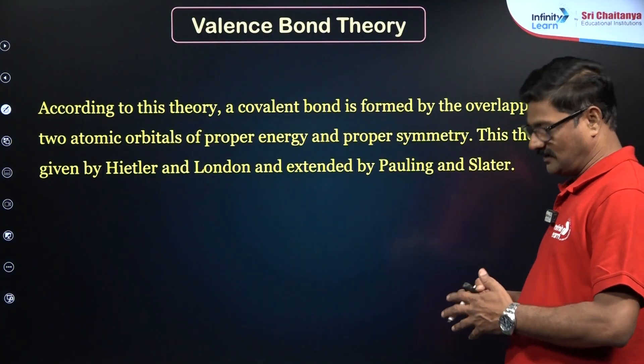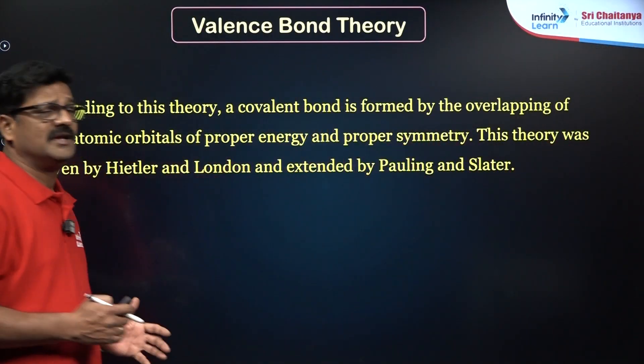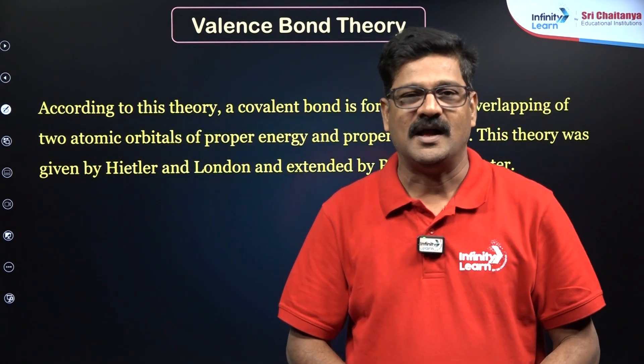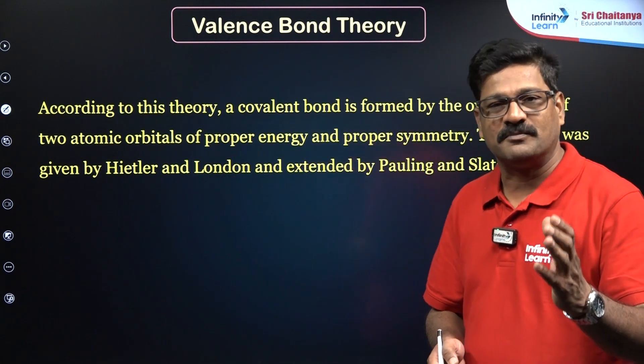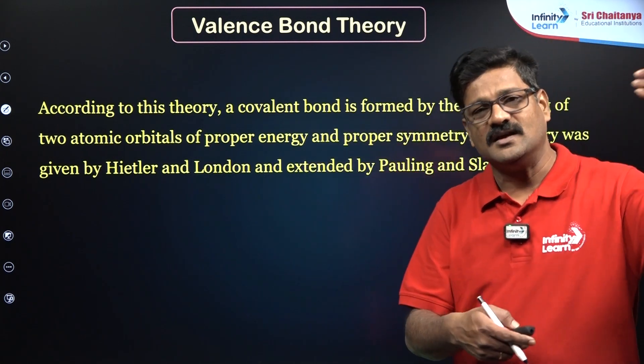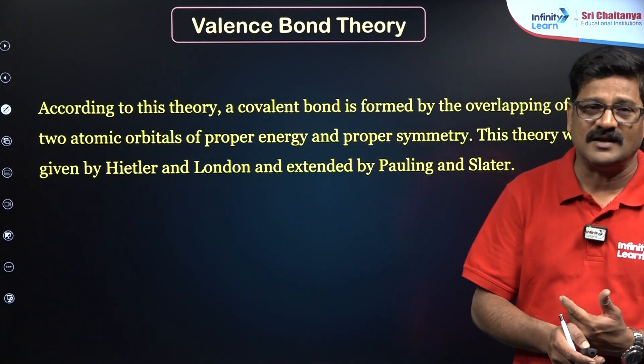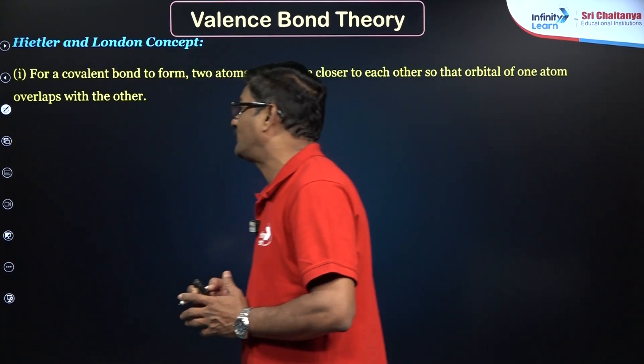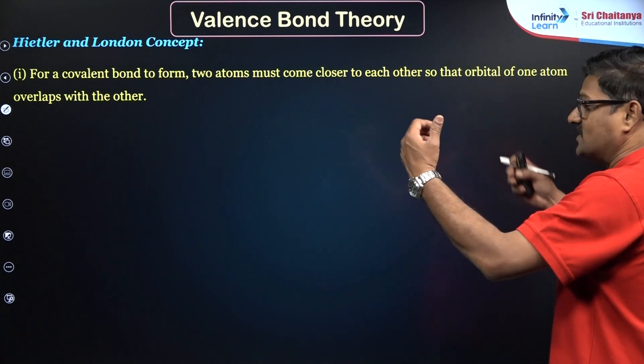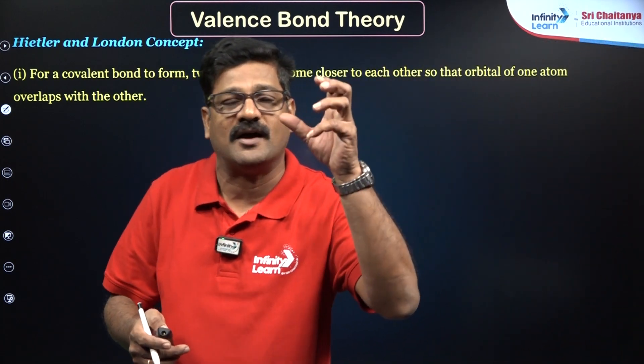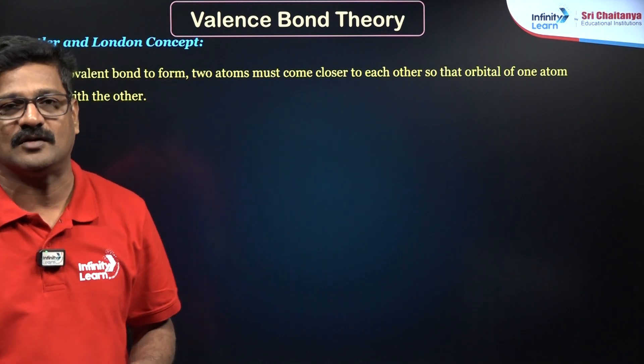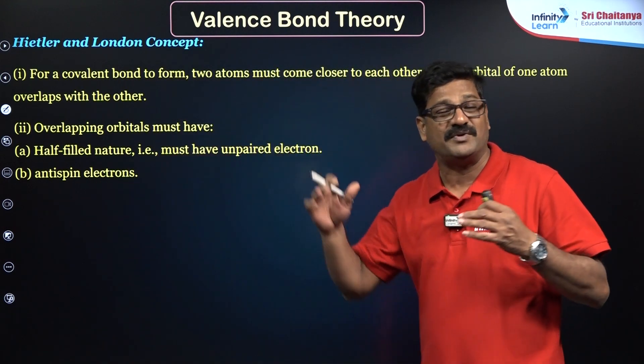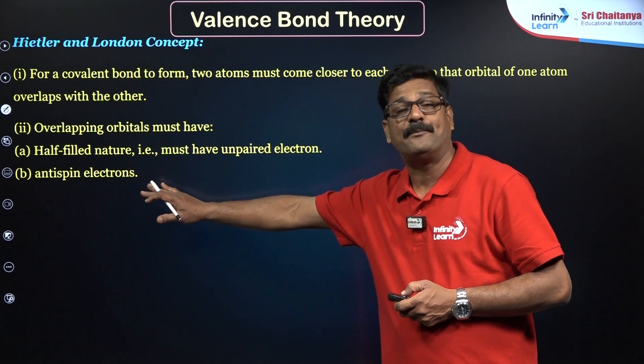And we will start valence bond theory. According to this theory, a covalent bond is formed by overlapping of atomic orbitals between the bonded atoms. And this concept is developed by Heitler and London, later it is extended by Pauling and Slater. Let us see the view of Heitler and London first and we will see Pauling and Slater.